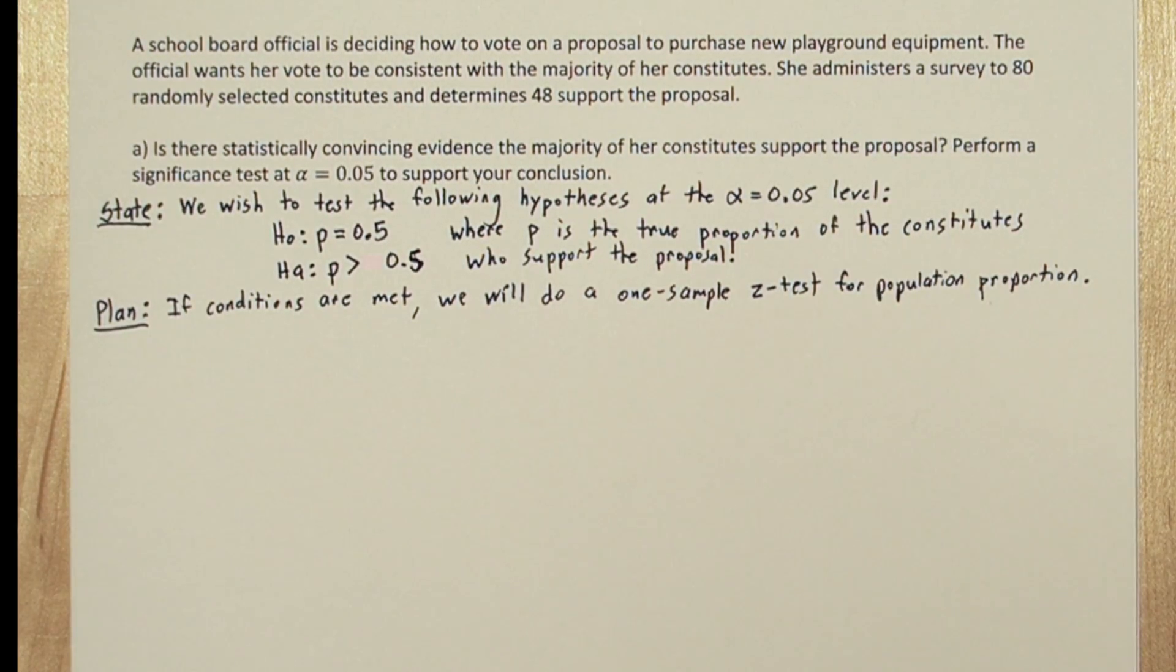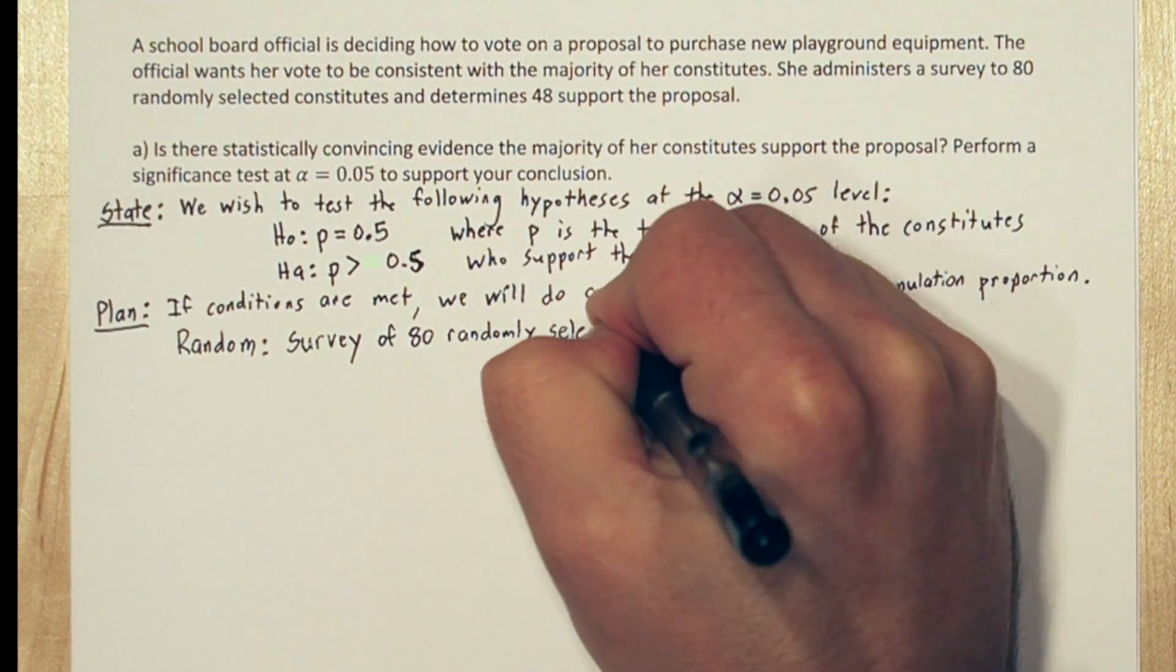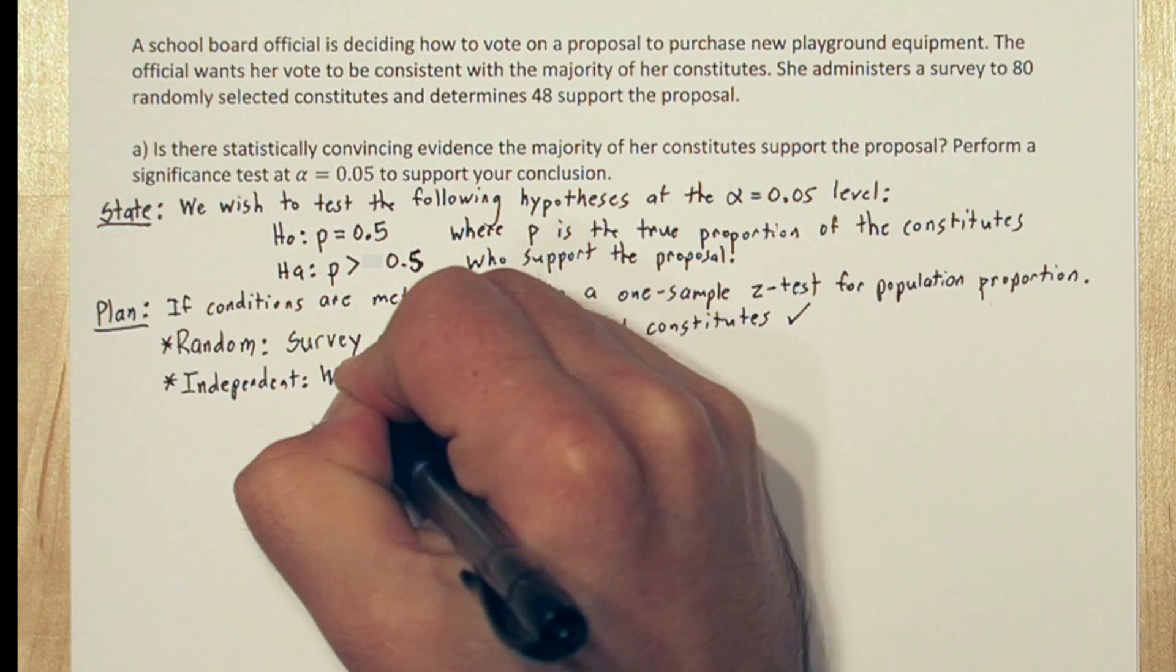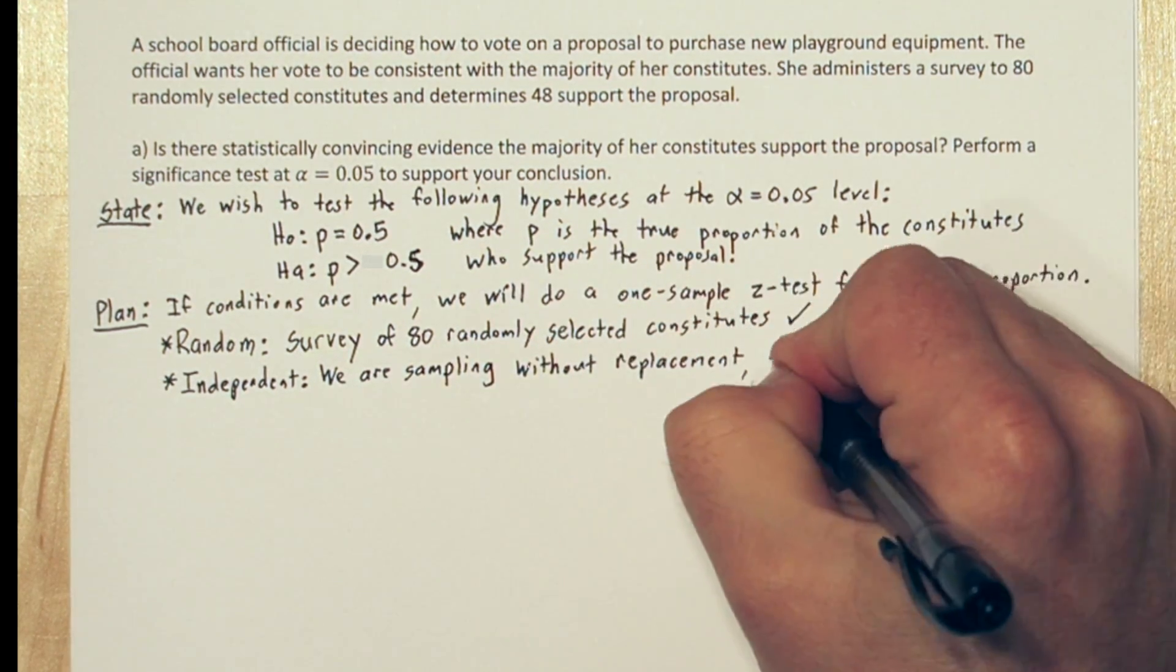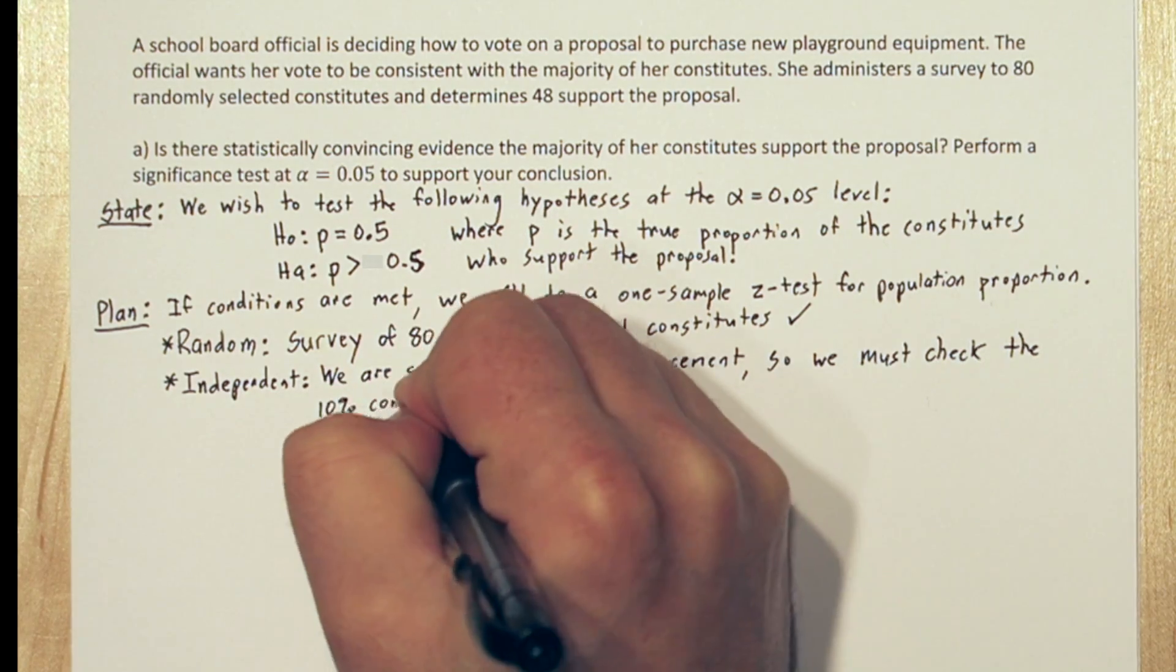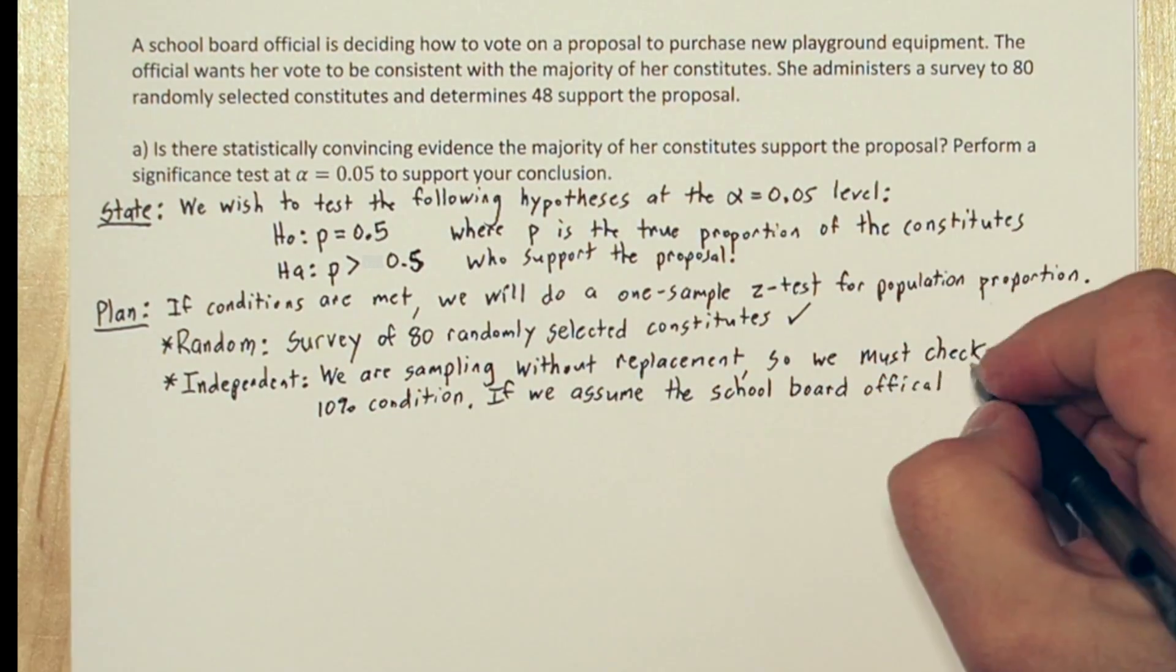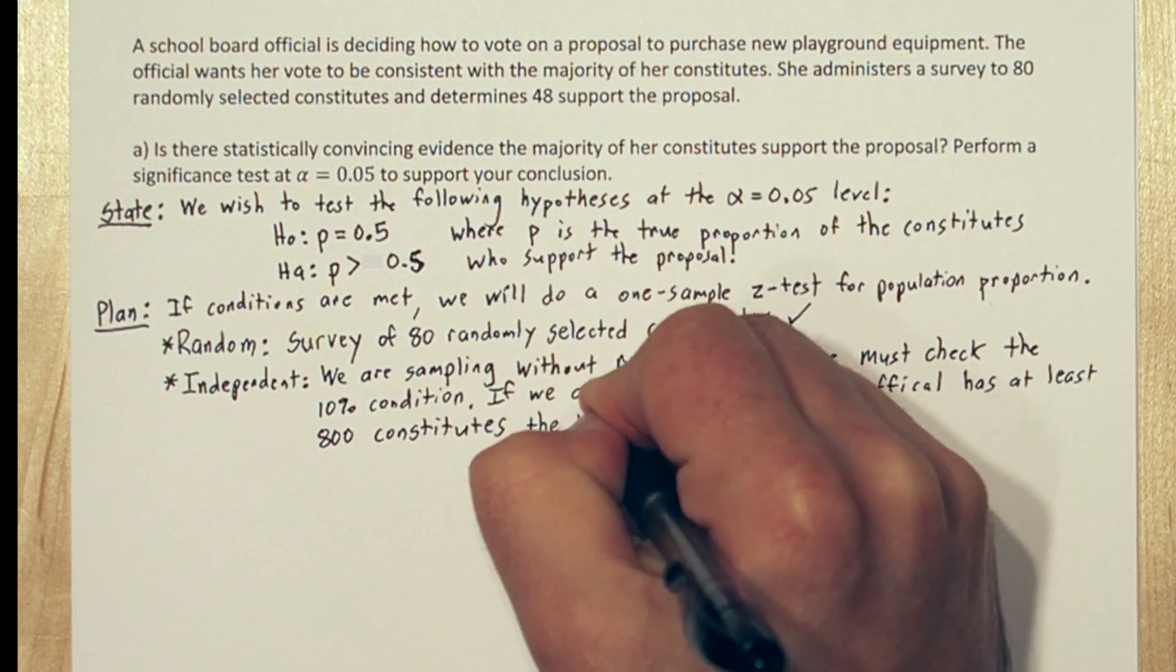The conditions are first random. The survey is of 80 randomly selected constituents, so that's met. For the independent condition, since we're sampling without replacement, we have to check the 10% condition. So as long as the school board official has at least 800 constituents, then our sample is no more than 10% of the population, and the 10% condition is met.